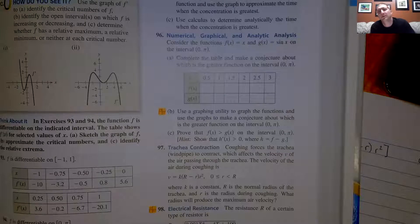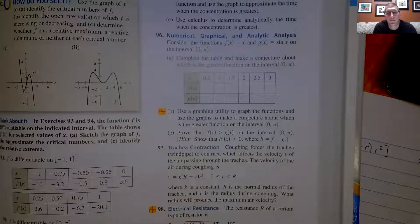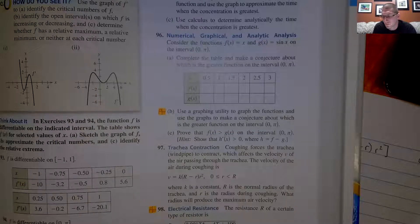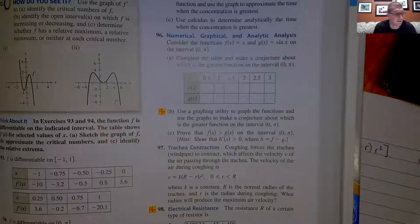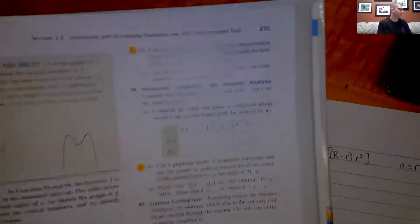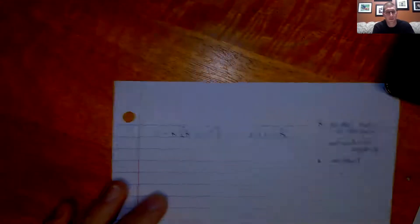What radius will produce the maximum air velocity? So of course to find the maximum, that's what we've been practicing. We're going to find the derivative, set it equal to zero, and either make our derivative line or just use common sense here to see which one of these values fits what we're trying to find.